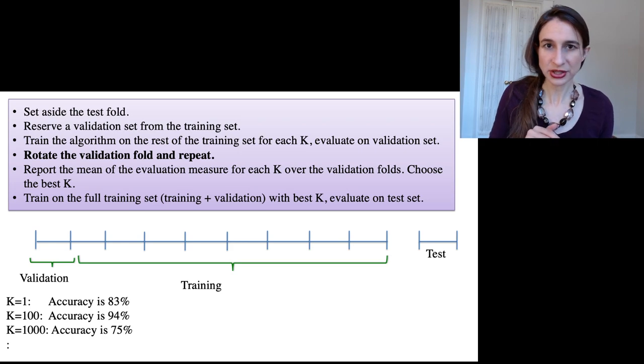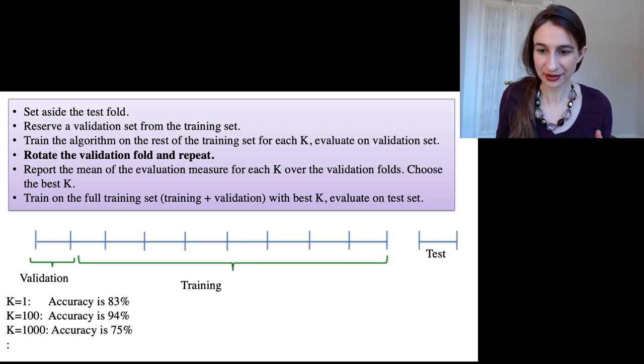Then I'll rotate the validation fold—which fold is the validation fold—and repeat this procedure, where again I get a different accuracy for each K on that validation set.